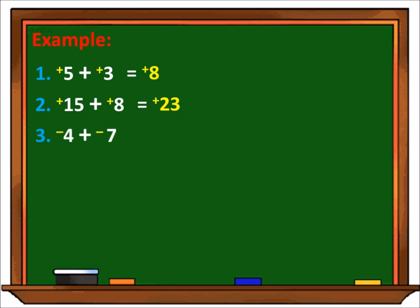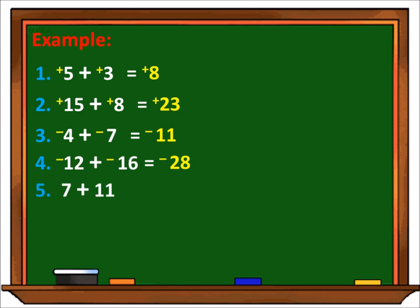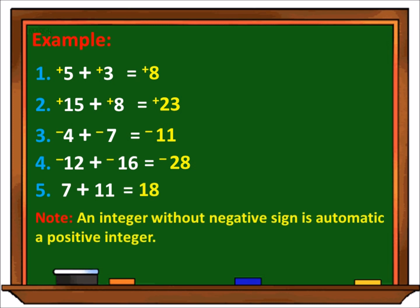Number 3: negative 4 plus negative 7. Since sila ay parehas na negative, kukopihin lang natin yung negative sign at i-add lang natin yung absolute value nila. Kaya ang sagot ay negative 11. Number 4: negative 12 plus negative 16 — the answer is negative 28. Kinopia lang natin yung negative na sign at i-add lang natin yung absolute value ng dalawang integers. And number 5: 7 plus 11 is equal to 18. Note: if an integer without a negative sign, it is automatically a positive integer.